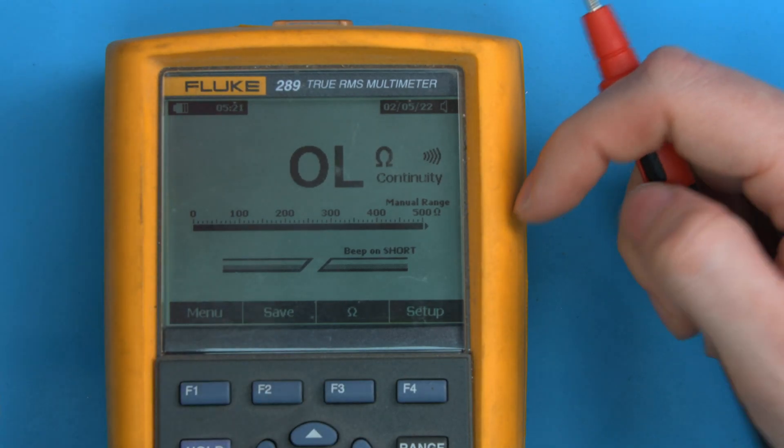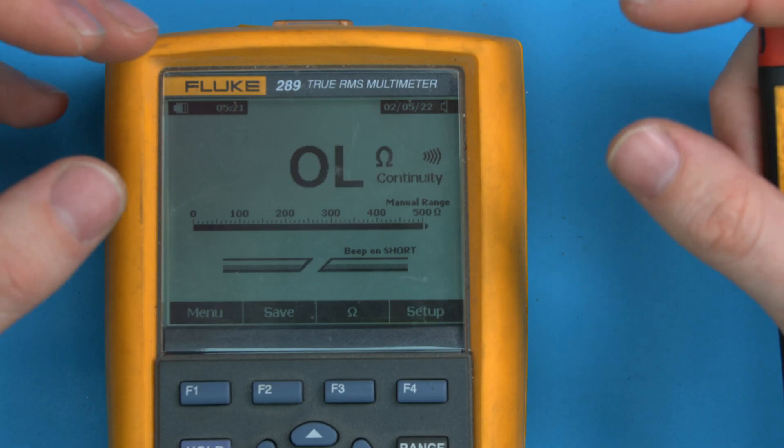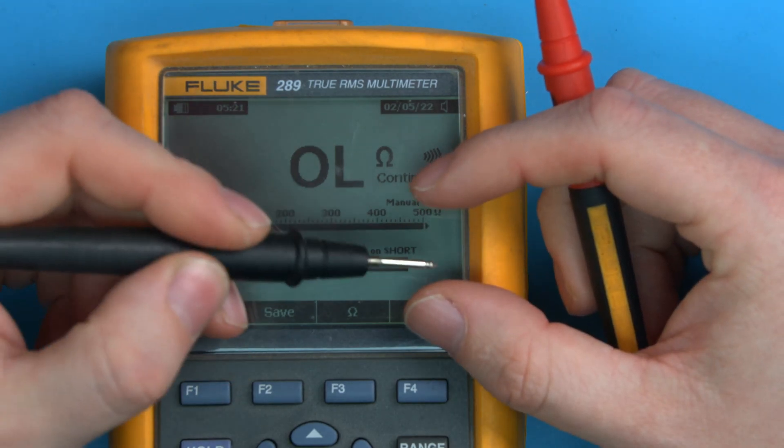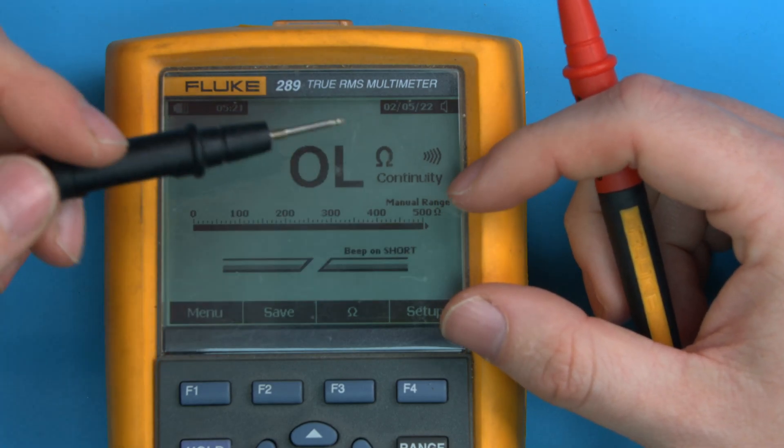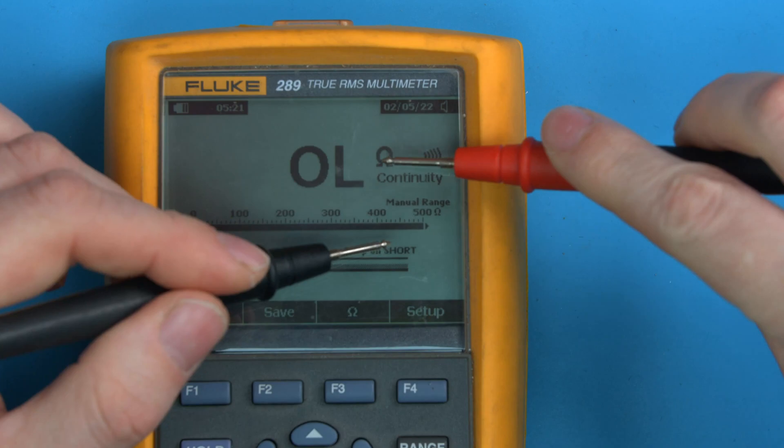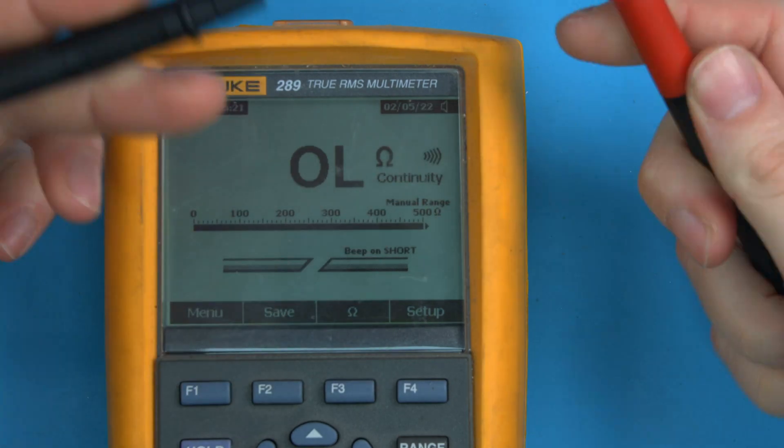So this is a good way to check if things on a circuit board are physically connected. This is how you check if a fuse is blown, because a fuse is just a device with a thin wire in, typically anyway, that blows when too much current flows through.